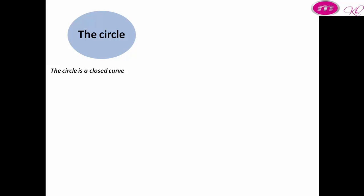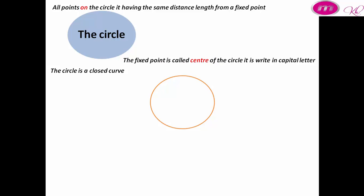closed curve. All points on the circle have the same distance length from a fixed point.